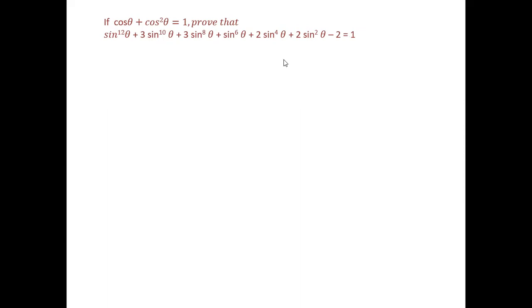If cos θ + cos²θ = 1, prove that sin¹²θ + 3sin¹⁰θ + 3sin⁸θ + sin⁴θ + 2sin²θ - 2 = 1.